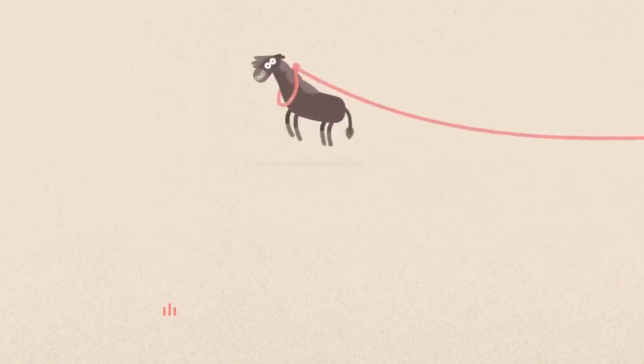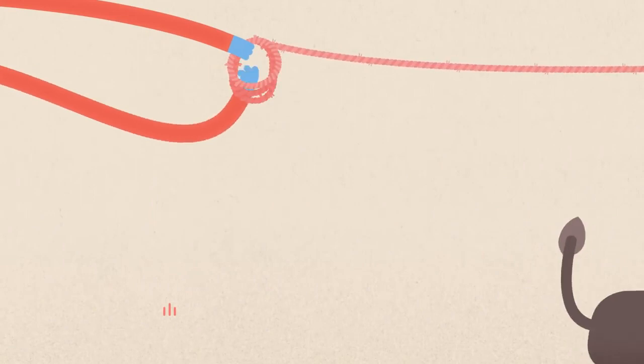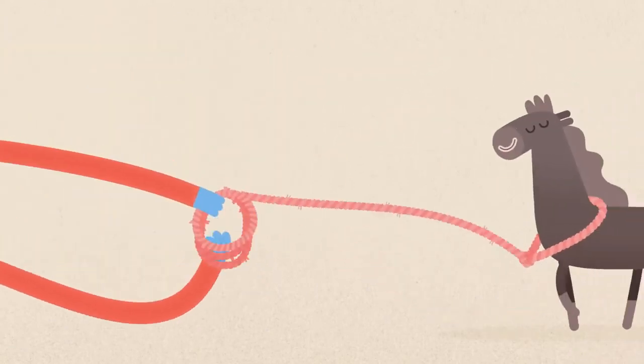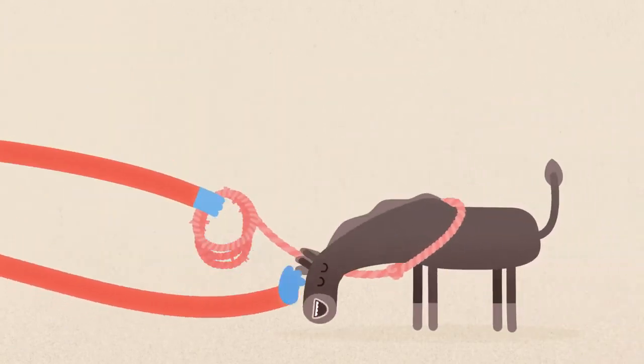The horse runs around, feeling like it's got all the space in the world. But very slowly, the rope's brought in, and the horse adjusts to this feeling, until it comes to a natural place of rest.